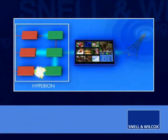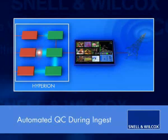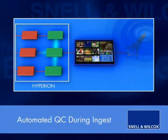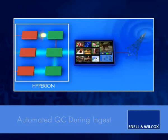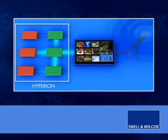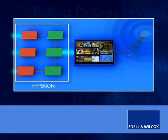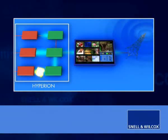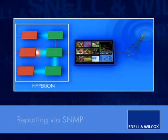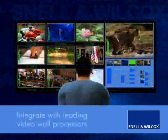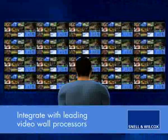Hyperion, on the other hand, can be implemented as a system-wide solution from ingest to transmission, in both the stream and file domains. Because Hyperion monitors the integrity of the content at every stage of the broadcast workflow, it can identify problems long before they would be noticed by a conventional system. This not only makes operators more efficient — it radically reduces the cost of manual QC processes.